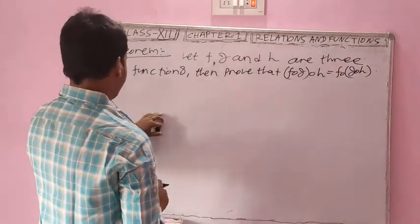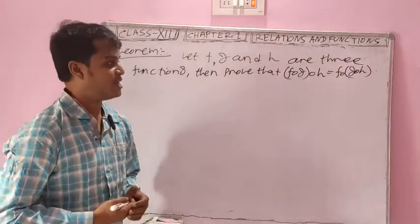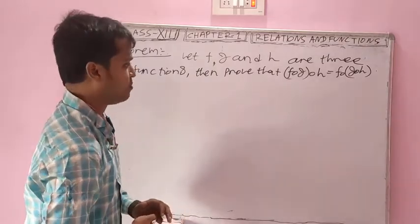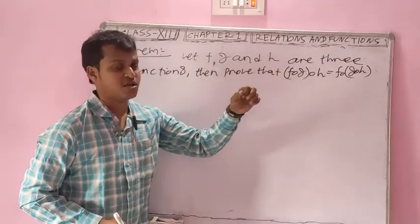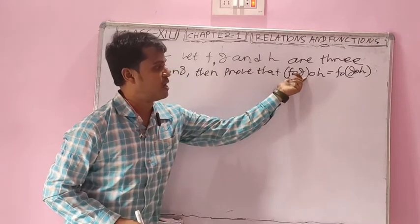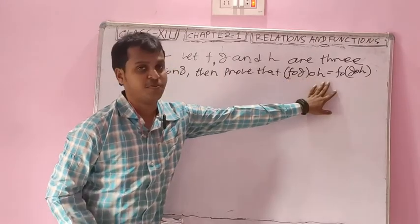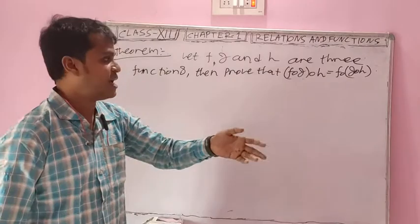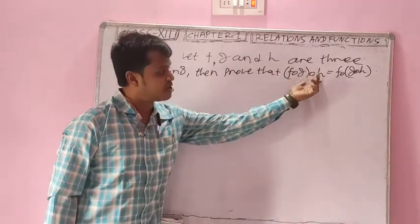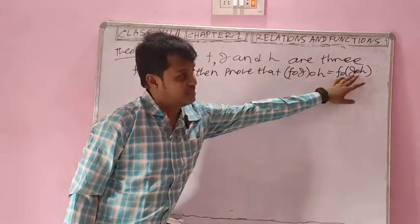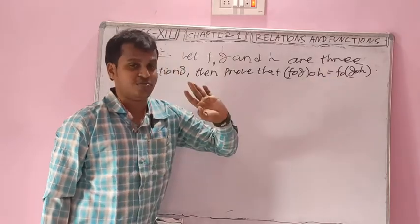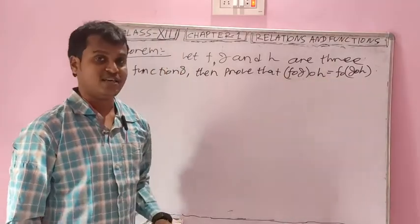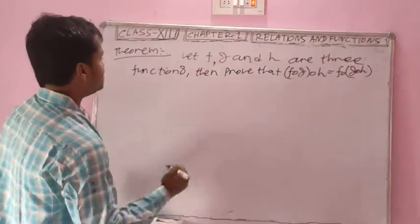That means the composition of functions satisfies the associative property. With three functions, first take the composition of f with g, then take its composition with h. This value is the same as first taking the composition of g and h, then composing with f. These two values are always equal, and we have to prove this.